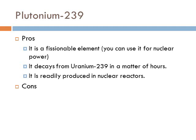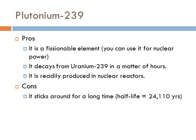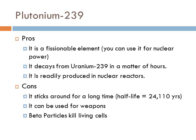The problems with plutonium-239 include that it sticks around for a very long time, which is a concern because enemies could obtain it and make weapons. It can also be used for weapons ourselves. Additionally, the beta particles emitted during its decay can kill living cells, and since it persists for so long, it keeps decaying and causing damage for extended periods.